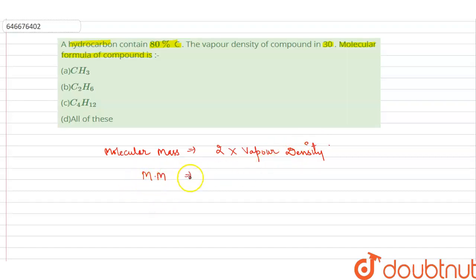So molecular mass of the hydrocarbon equals 2 times vapor density. We are provided with vapor density 30, so 2 times 30 equals 60. The molecular mass of the compound is 60.